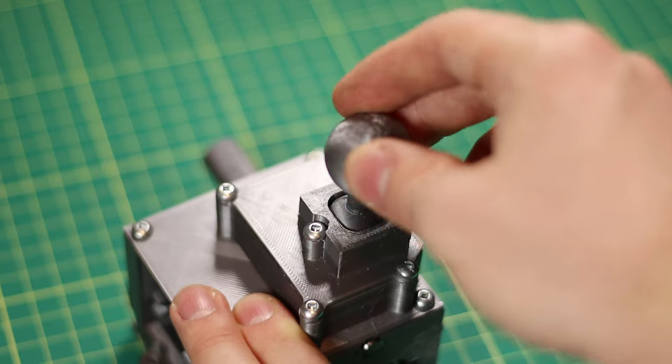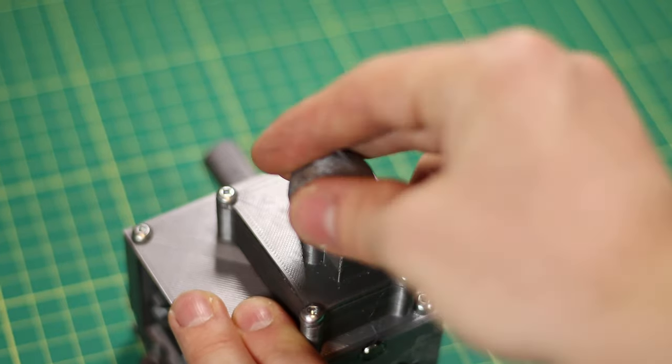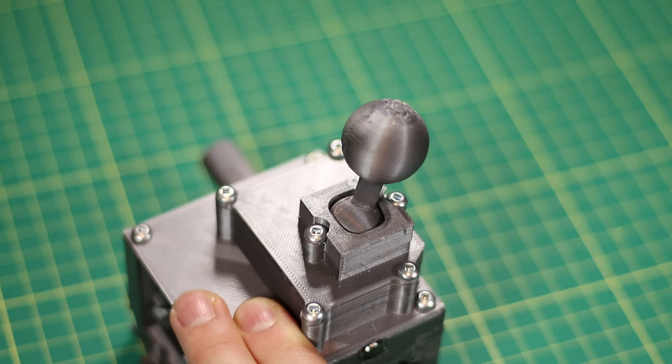Now when I do a quick test by hand, you can see that everything is working just as it should. Although the only thing is, in retrospect, I probably should have added an H-gate to the shifter. Although it does shift fine without it, it is a little bit difficult to go from the first gear all the way over to third. So now that everything is put together, I think we can actually start our first test.